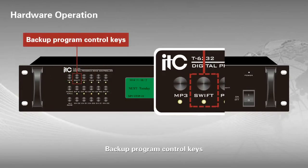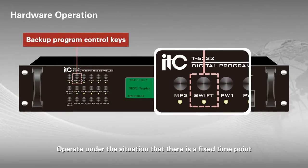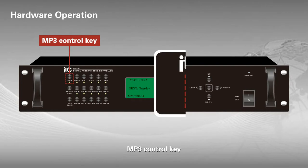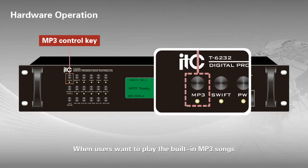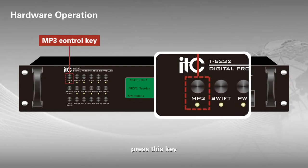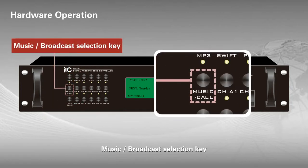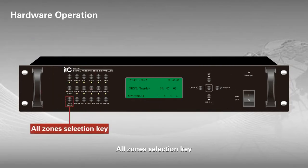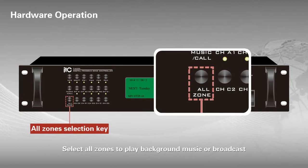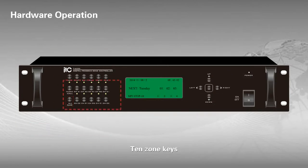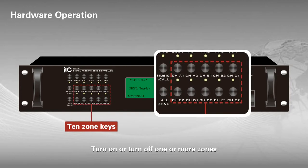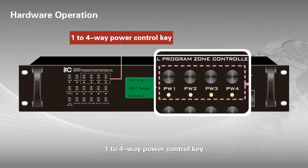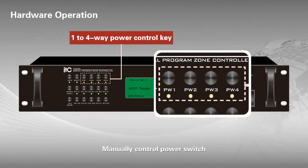Hardware operation. Backup program control key: operates when there is a fixed time point but run time is uncertain. MP3 control key: press to play the built-in MP3 songs. Music broadcast selection key: switches between background music and broadcast. All drones selection key: selects all drones to play background music or broadcast. 10 drone keys: turn on or off one or more individual drones. 1-to-4-way power control key: manually controls the power switch.